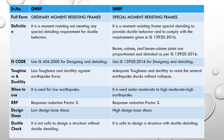For column design, IS 13920 specifies the lapping zone, the confining zone, and the stirrup spacing within the confining zone. For shear walls, IS 13920 classifies three types: ordinary, intermediate, and slender shear walls. The reinforcement requirements for each type of shear wall are also specified in IS 13920. All these provisions are covered in IS 13920.